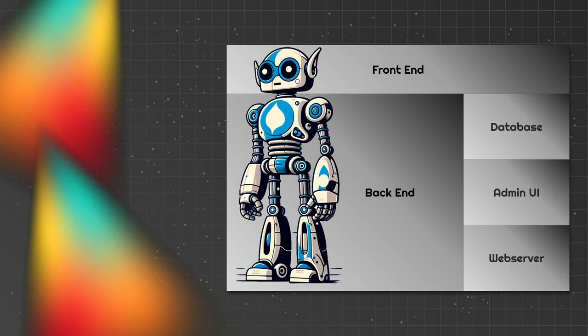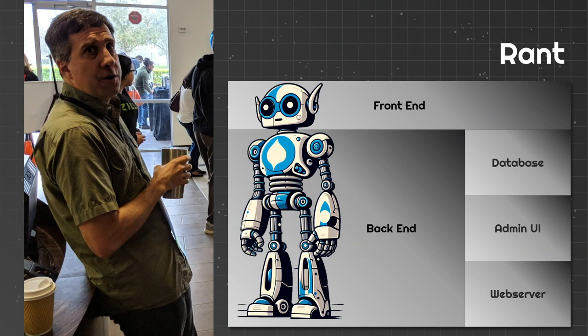The common analogy when talking headed or headless is a robot. The head of your robot is your front end, and the body of your robot is your back end. I'll note this analogy has never really made sense to me, because the head is where all your decisions are made — what good is a body without a brain? But that's what the industry has settled on, so we'll follow along with it.